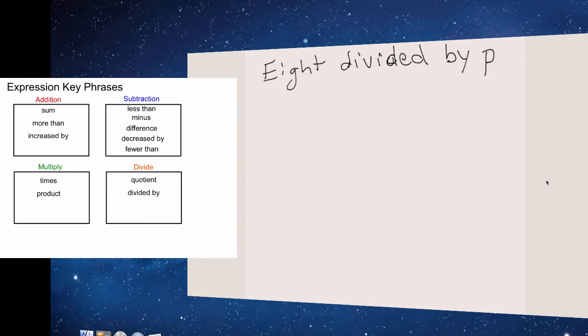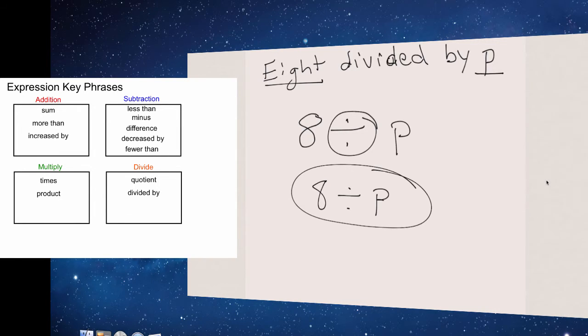Let's try 8 divided by P. We know divided by means divide sign. It says 8 is the number being divided by P. So, that means 8 is going to be in front, being divided by P. So, 8 divided by P is my algebraic expression.